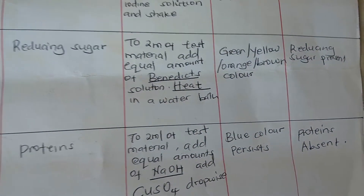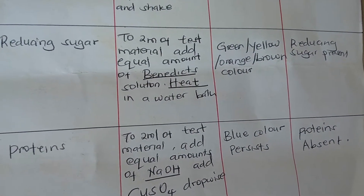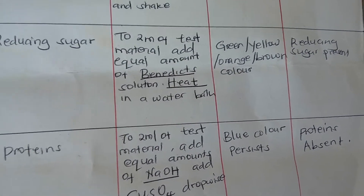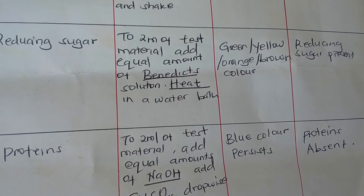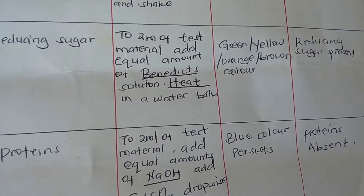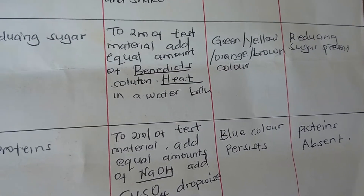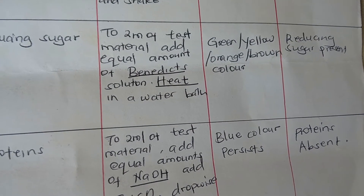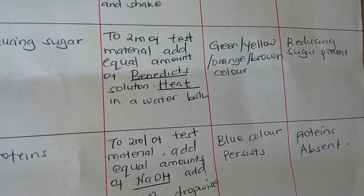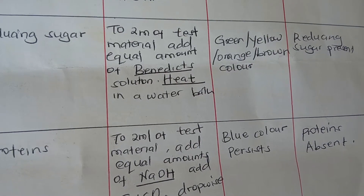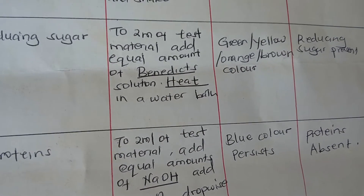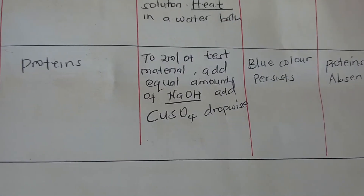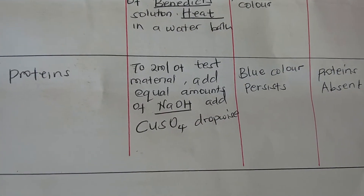For the test for reducing sugar, add 2 ml of the test material into a test tube, then add an equal amount of Benedict's solution and heat in a water bath — do not heat directly as it may be dangerous. You will observe a color change from blue to green, to yellow, to orange, to brown. Any of these colors indicates that reducing sugar is present.